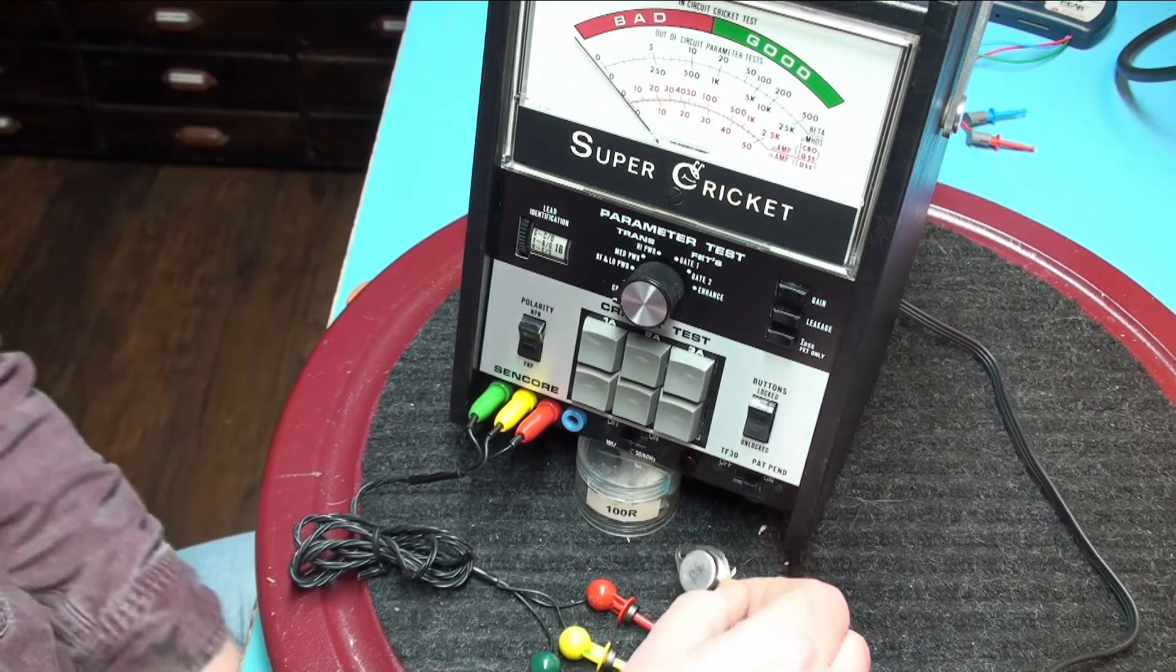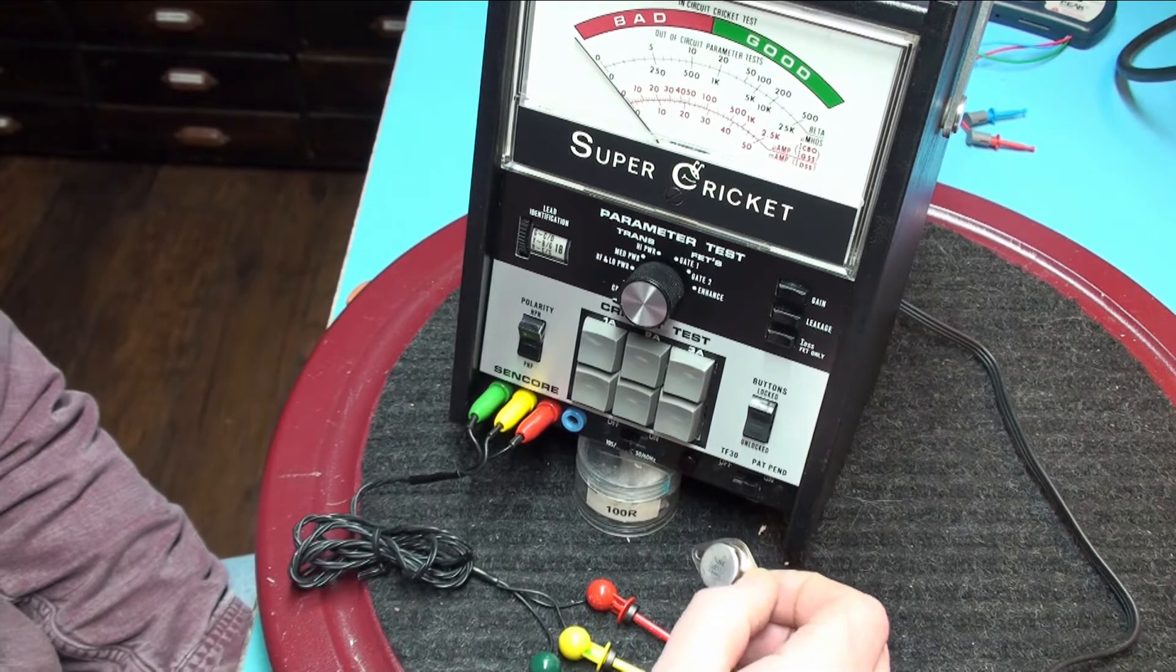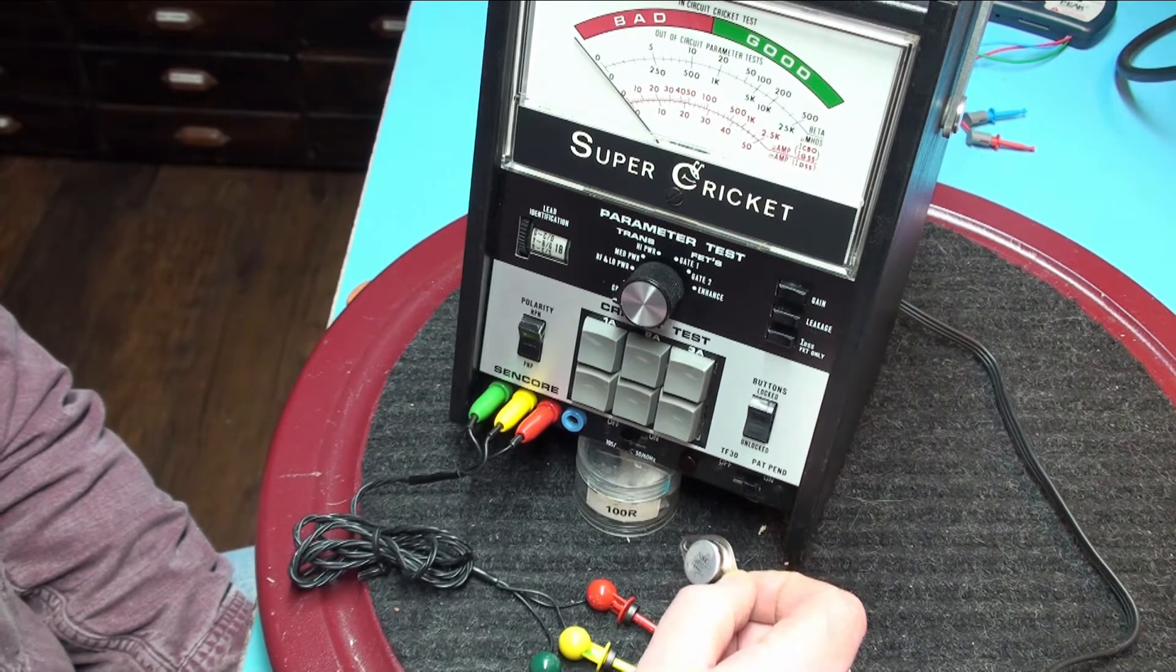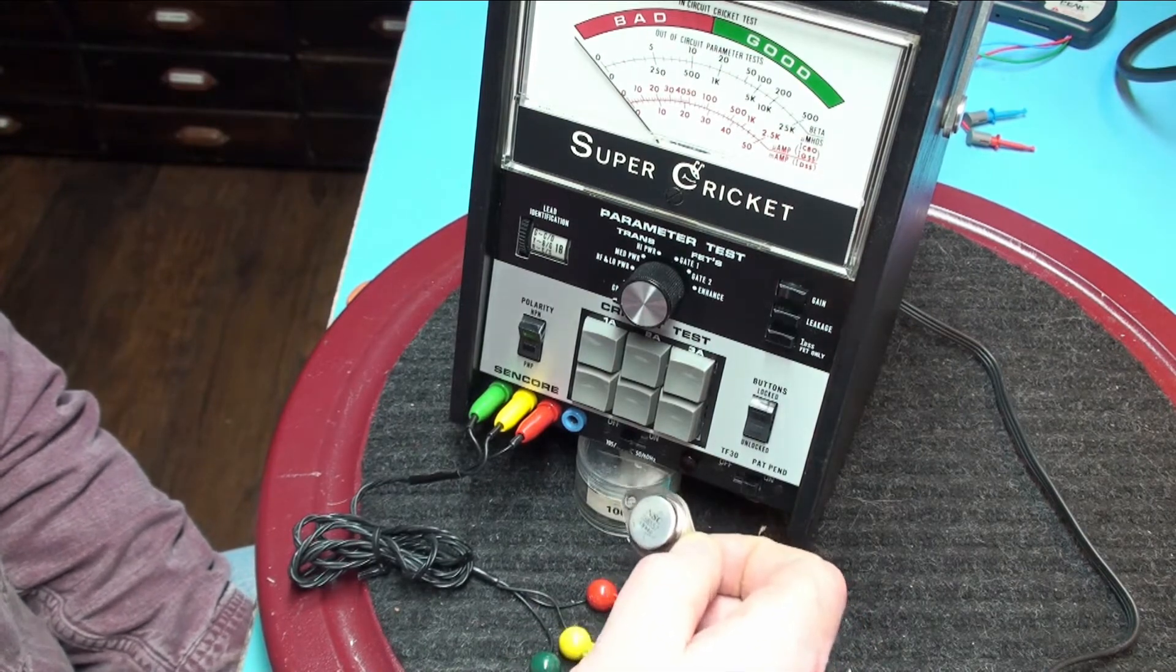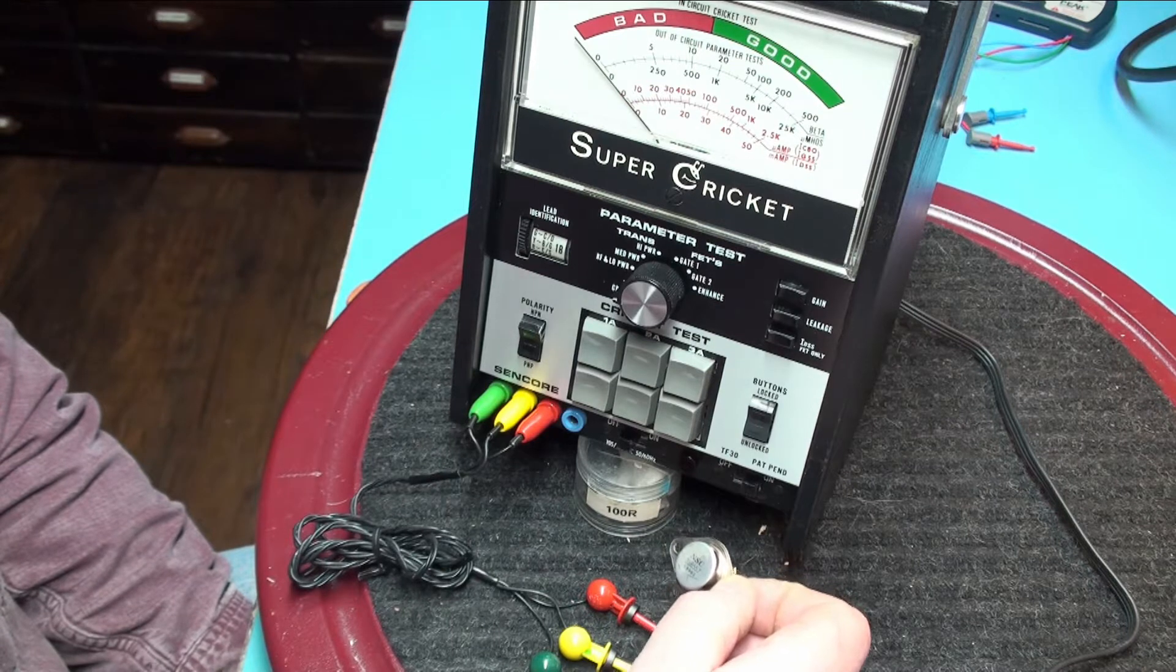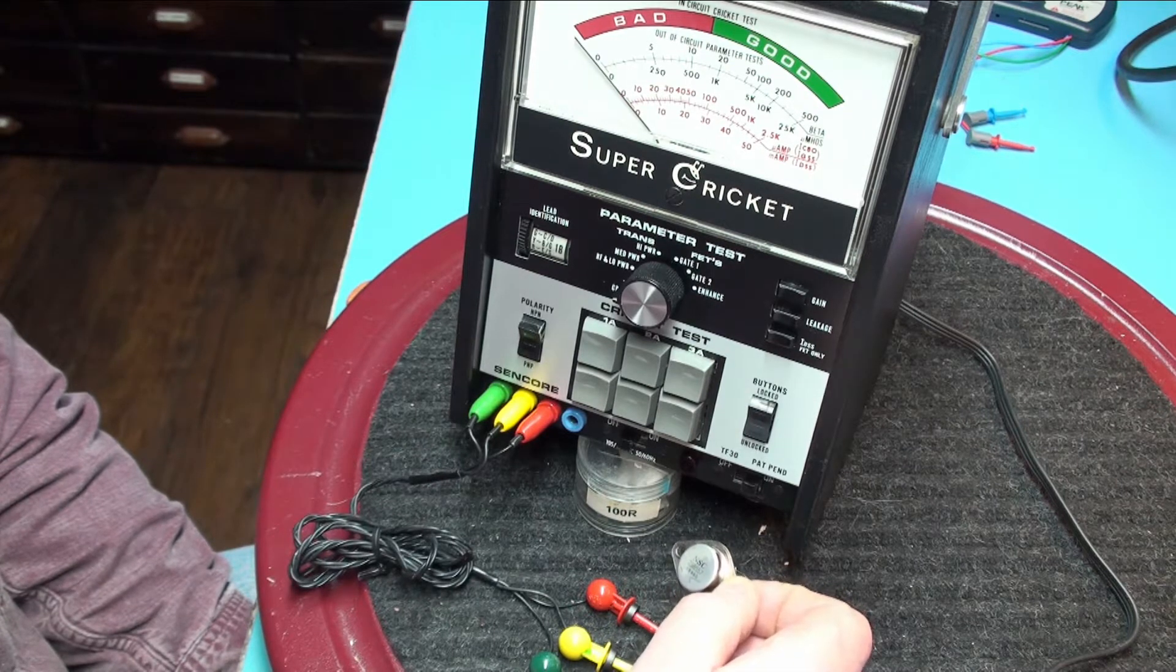Here is a 50 watt power transistor. It's from a 1976 Marantz. It's a 2SB557. It is not in the reference guide so it must be newer than the reference guide.